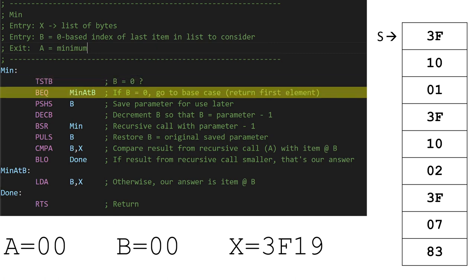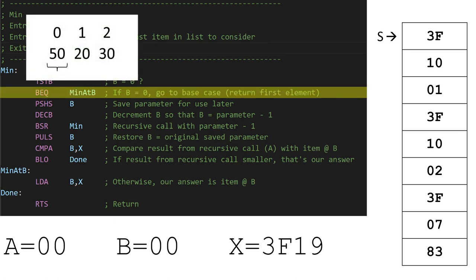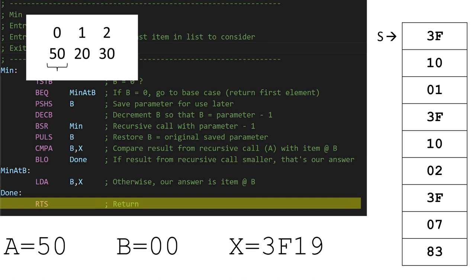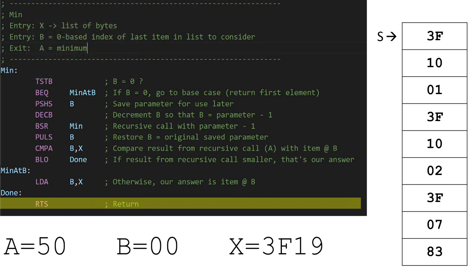Now B actually is 0. So we just skip down here. We get the item at slot B from the list, and put it in the A register. Remember that in this call to min, we're being asked to find the minimum from a list of just one number, 50. So the answer can only be 50. The A register is where we hold our result, so it's good to go. Then we return.